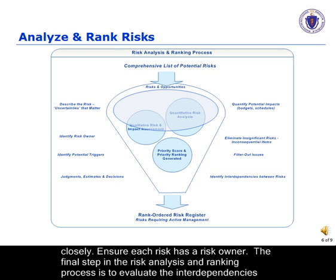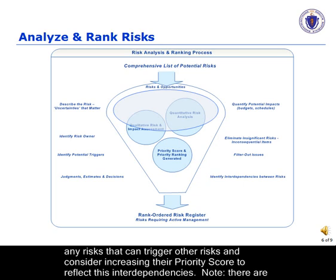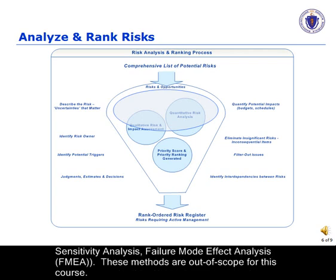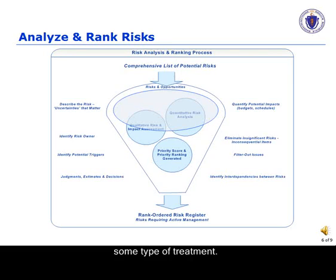Ensure each risk has a risk owner. The final step in the risk analysis and ranking process is to evaluate the interdependencies between risks. There can be a cascading effect across risks — one risk occurs triggering another risk, which triggers another risk. Carefully note any risks that can trigger other risks; consider increasing their priority score to reflect their interdependencies. Note there are sophisticated quantitative and qualitative approaches for risk analysis and ranking, such as Monte Carlo simulation, decision trees, sensitivity analysis, and failure mode effect analysis. These methods are out of scope for this course. At the conclusion of this step, the team must have filtered out minor issues and created a prioritized list of risks that require some type of treatment.